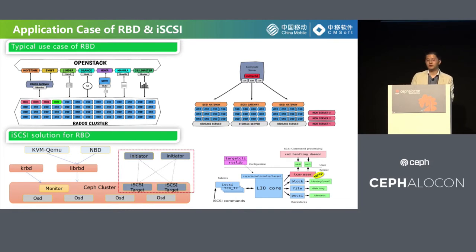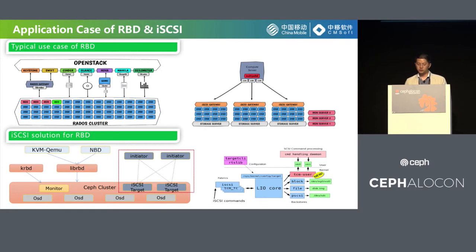Here are the typical use cases of RBD in our production environment. It's mainly used as a back-end of OpenStack clusters, supplying service for Cinder, Glance, Nova, and so on. Besides using RBD directly to connect to the Ceph cluster, we also provide the iSCSI solution for Ceph RBD. It supports VMware, zones, and bare metal servers through the iSCSI protocol.